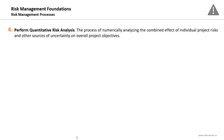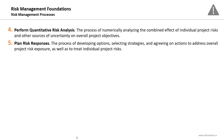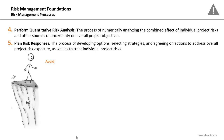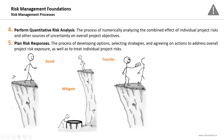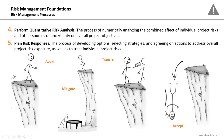Quantitative Risk Analysis is the numerical analysis of the combined effect of individual project risks and other sources of uncertainty on the overall project objectives. Plan Risk Responses is the process of developing options, selecting strategies, and agreeing on actions to address overall project risk exposure as well as individual project risks. For example, if there is a risk of jumping from an edge, you could go the other side — that's avoidance — or ask for support to reduce the impact of falling — that's mitigation. You can pay someone to jump instead of you — that's transfer — or you can just accept and jump.